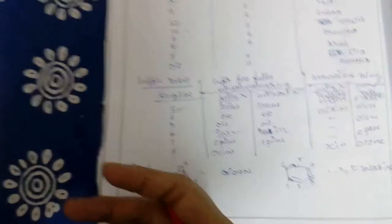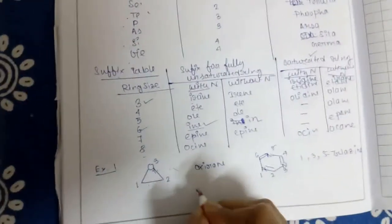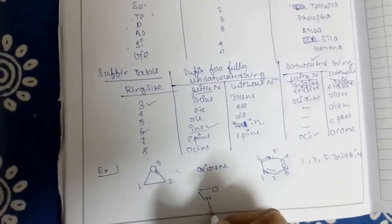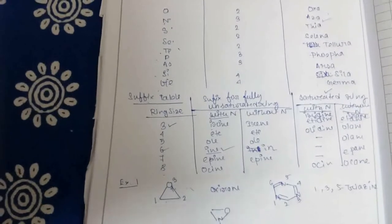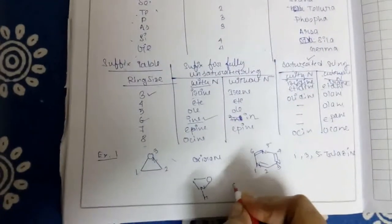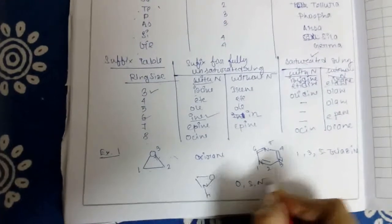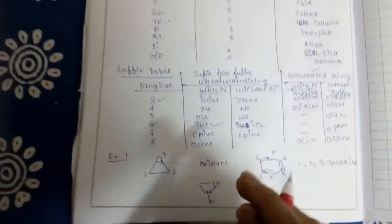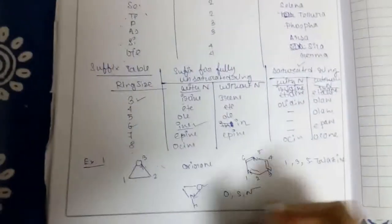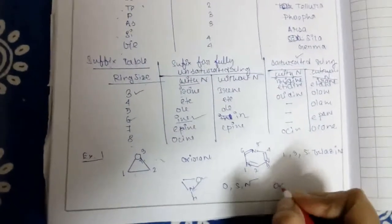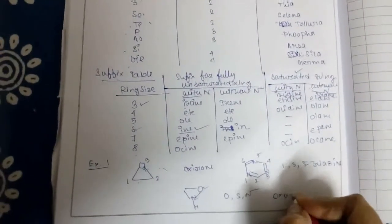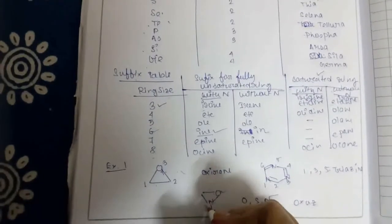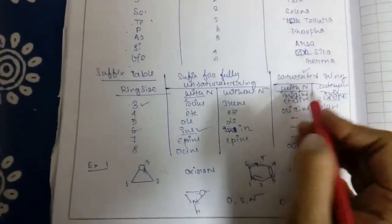Now, if two or more hetero atoms are present in the ring, like oxygen and nitrogen present here, then the preference order will be: oxygen, then sulfur, then nitrogen. So first oxygen, then nitrogen. The name will be one after another - first oxygen, that is 'ox,' second nitrogen, that is 'aza,' omitting the 'a': 'oxaz.' The ring is saturated and 3-membered.